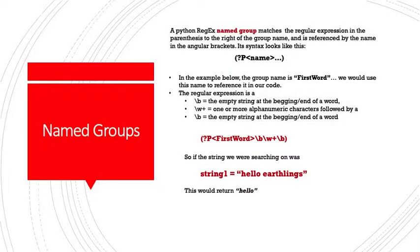We took a tour of groups. Now we're going to talk about named groups. A Python regex named group matches the regular expression in the parentheses to the right of the group name and is referenced by the name in the angular brackets. Its syntax looks like this. We have the parentheses, we have a question mark, and then we have P and angular brackets around whatever user defined name you want to use. The ellipsis represents the regular expression that you will pass in. In the example below, the group name is first word. We would use this name to reference it in our code.